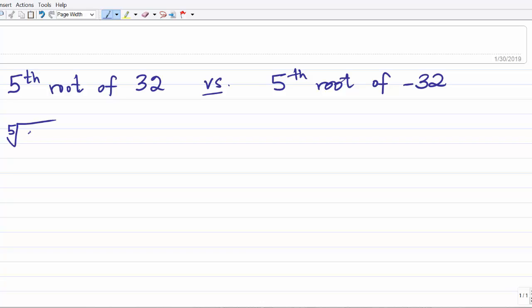The fifth root of 32 is 2 as I explained in the video. But the fifth root of negative 32 is going to be negative 2, because negative 2 to the fifth power is negative 32.